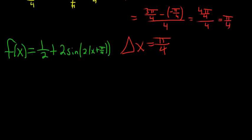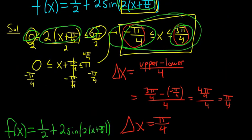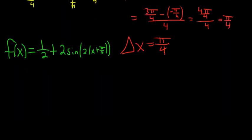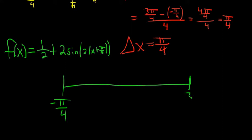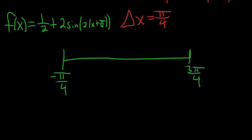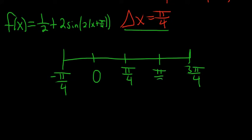Step three: we're going to draw a little picture. Our interval started at -π/4 and goes to 3π/4. Now you just keep adding delta x. Adding π/4 to -π/4 gives 0. Do it again, you get π/4. Do it one more time, you get 2π/4, which is the same as π/2. Do it again, you get 3π/4. So just keep adding π/4 to get all these numbers.